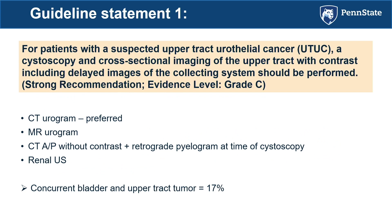This brings us to guideline statement number one: for patients with suspected upper tract urothelial cancer, cystoscopy and cross-sectional imaging of the upper tract with contrast and delayed images of the collecting system should be performed. This is essentially the standard workup for gross hematuria. The preferred evaluation is CT urogram. If patients have poor renal function or severe contrast allergy, MRI urogram is used. If neither is possible, CT without IV contrast. Concurrent bladder cancer and upper tract cancer occurs in about 17% of patients at diagnosis.